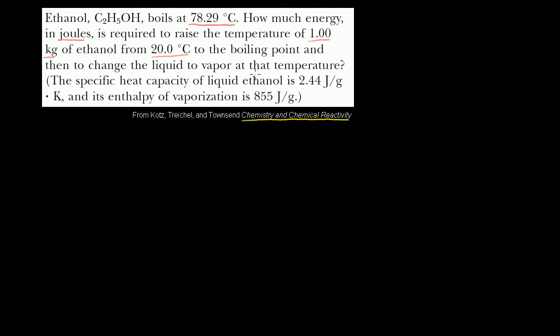So there's really two parts of this problem. How much energy in joules to take the ethanol from 20 degrees to 78.29 degrees Celsius? That's the first part. And then once we're there, we're going to have 78.29 degrees Celsius liquid ethanol. But then we also need the energy to turn it into vapor.